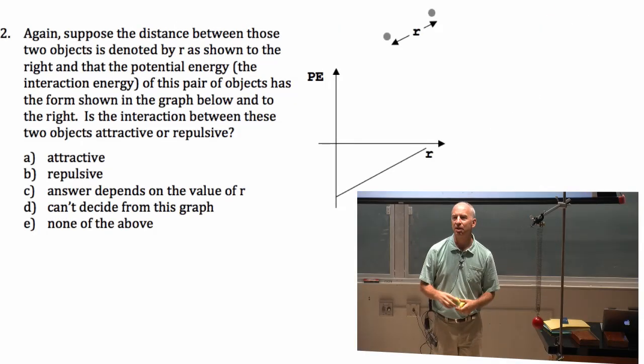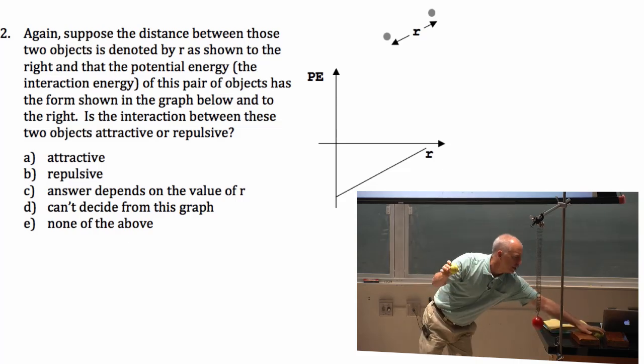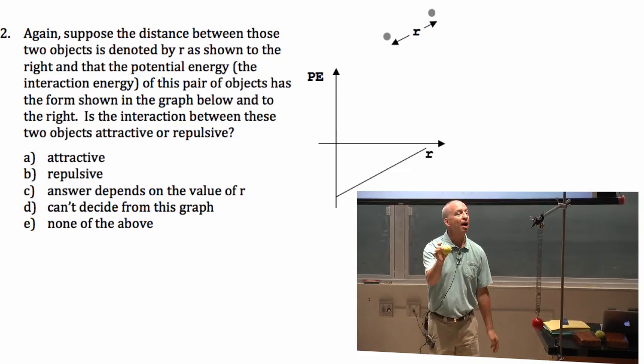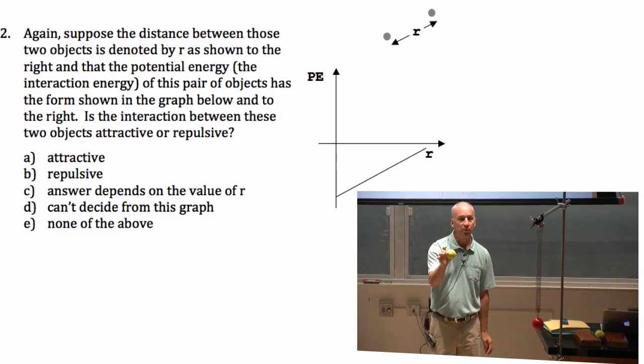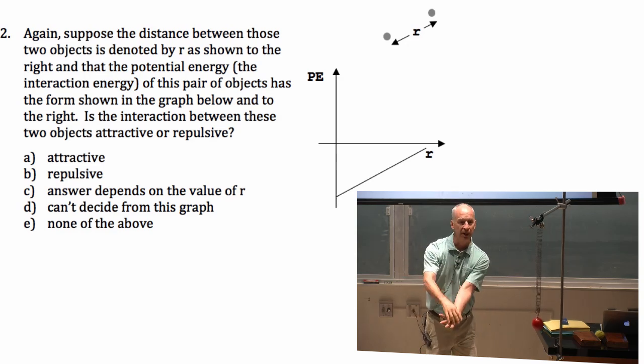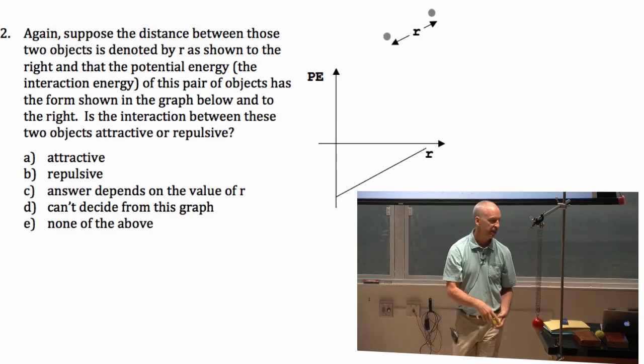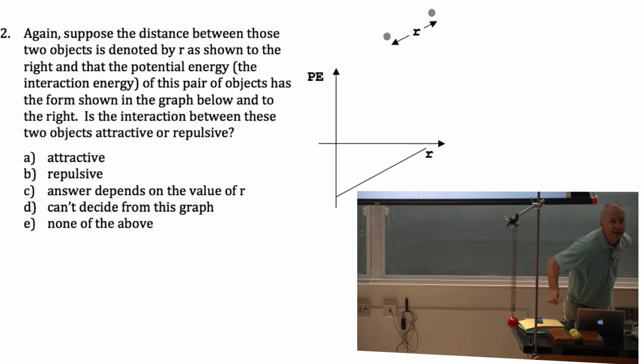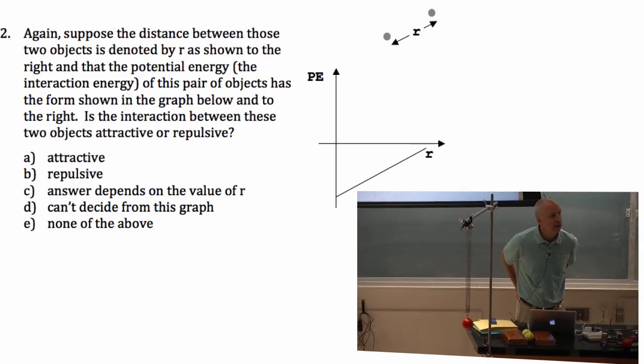Now this one you actually know is at least somewhat physical. Here's the ball. The earth is the other object. They attract each other, which means the potential energy goes down as they get closer together, and that's what you see there. Potential energy going down as the two things get closer together.